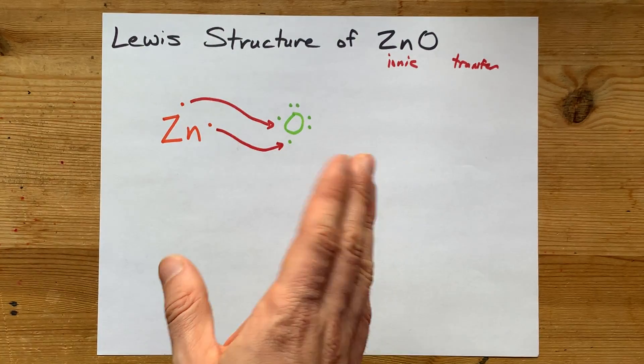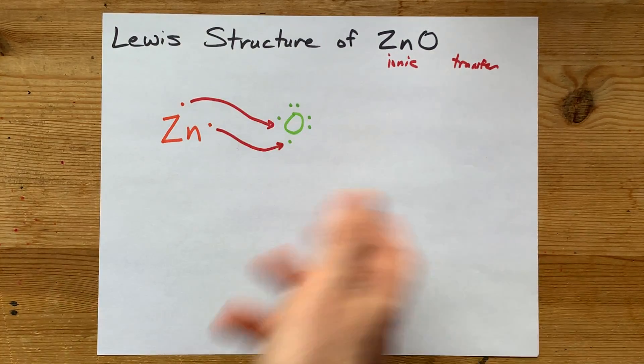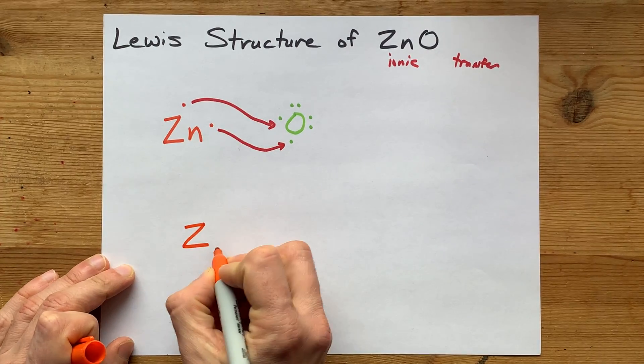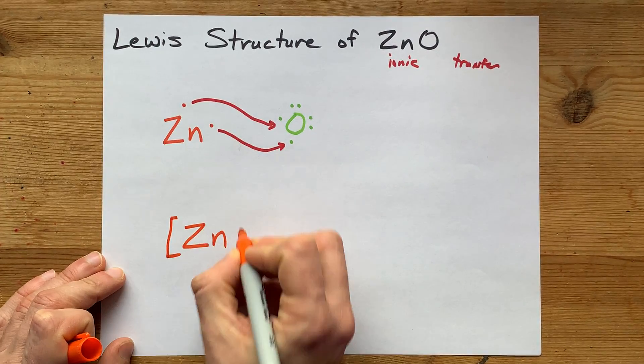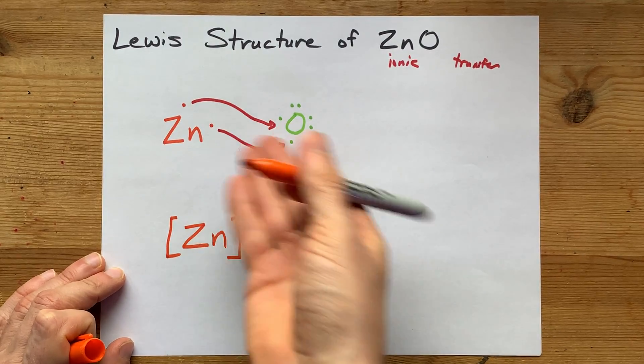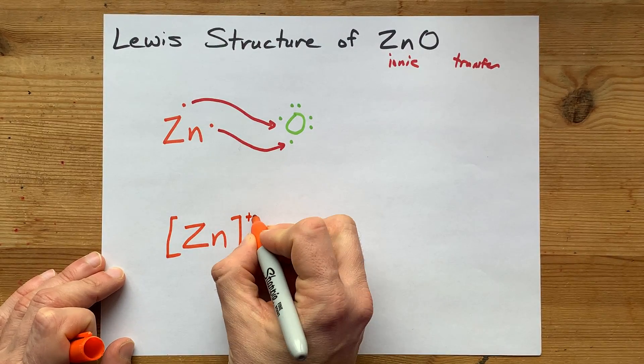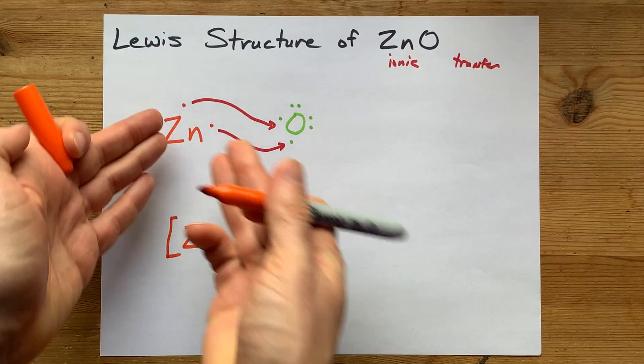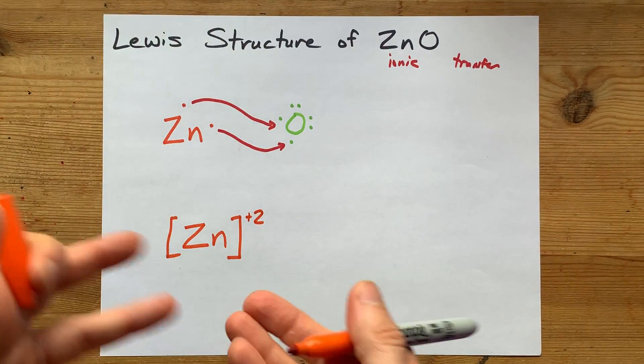To complete the actual Lewis structure, because this is just showing how it happens, is drawing the zinc without its valence electrons because it gave them away. And its charge, which is now plus 2 because it lost 2 negatively charged electrons.